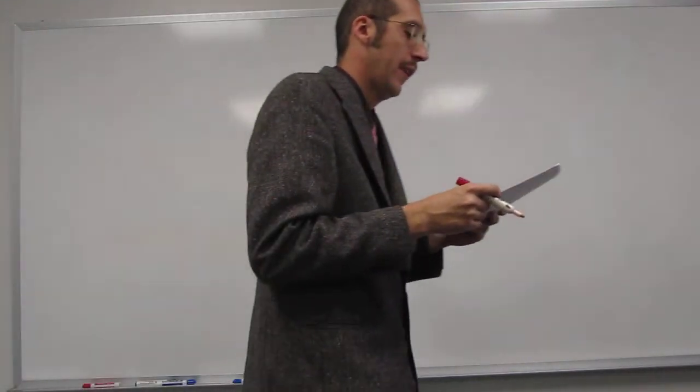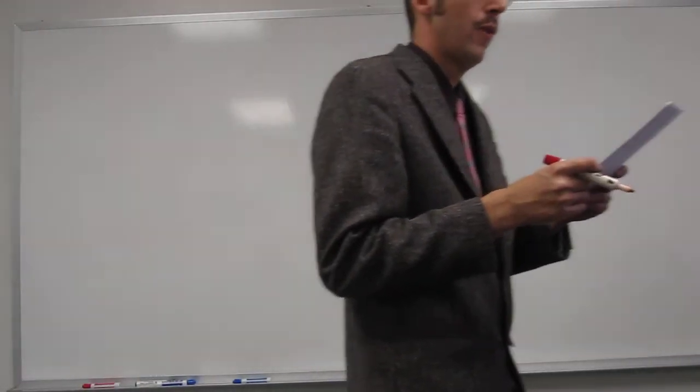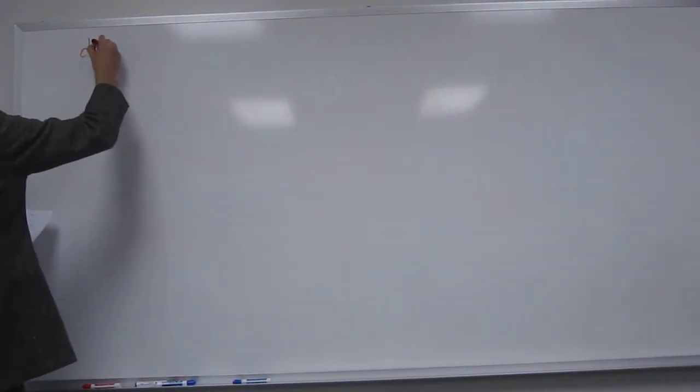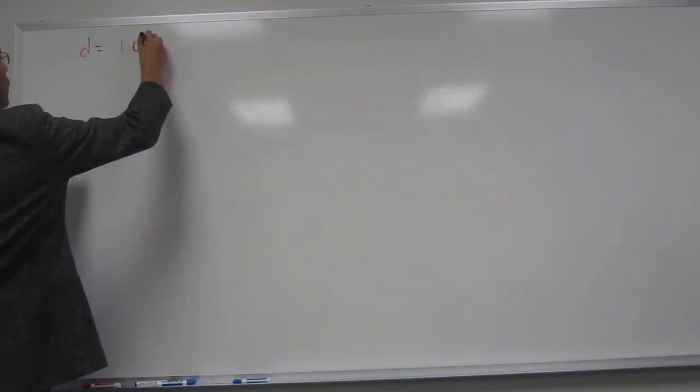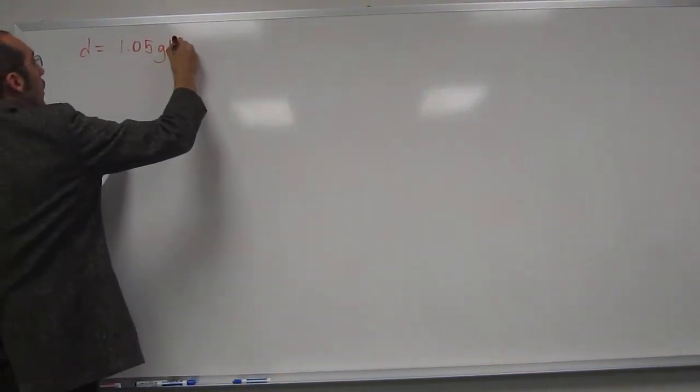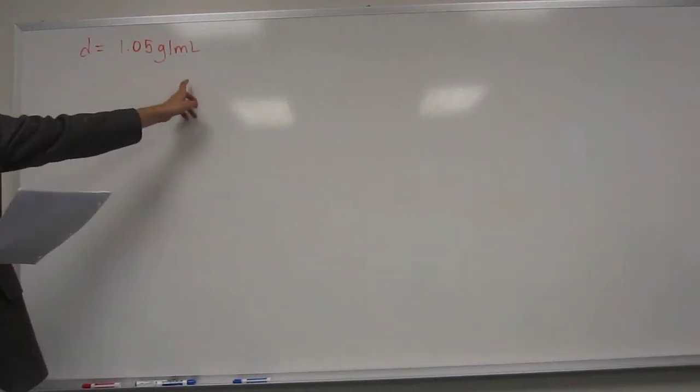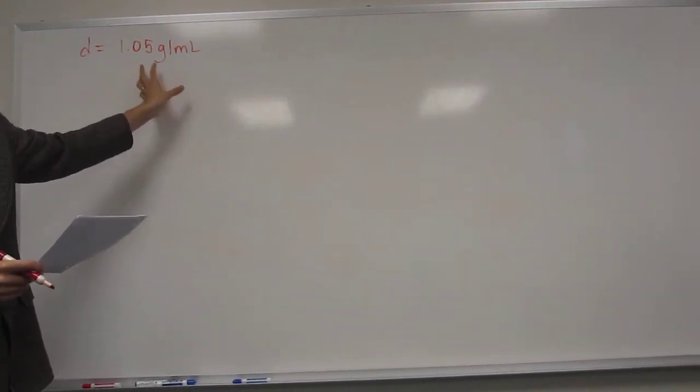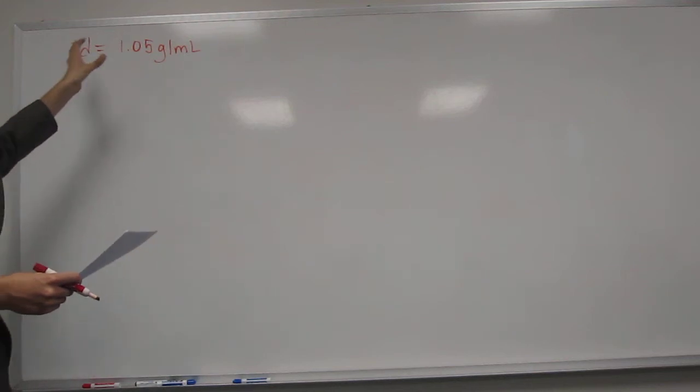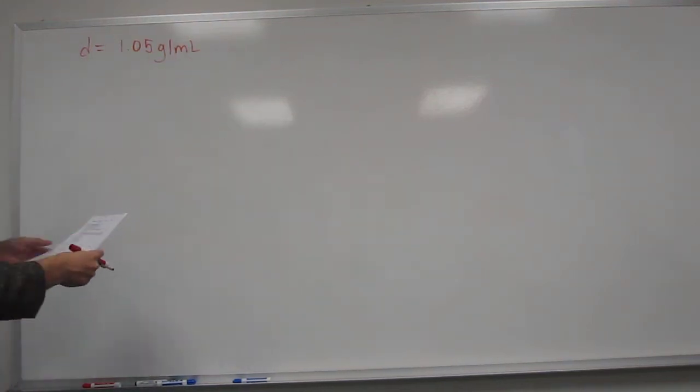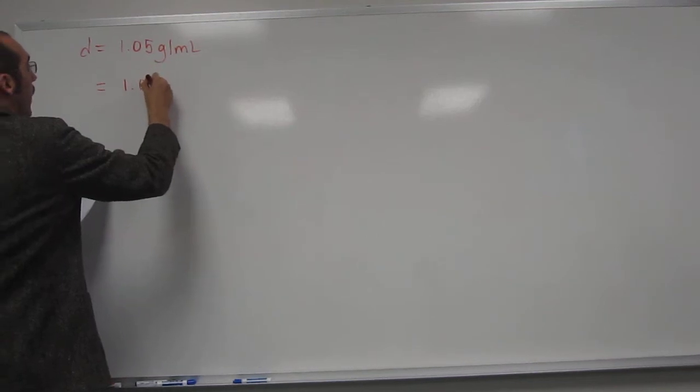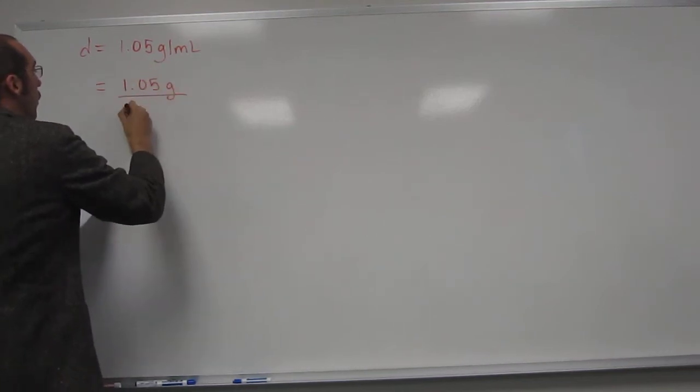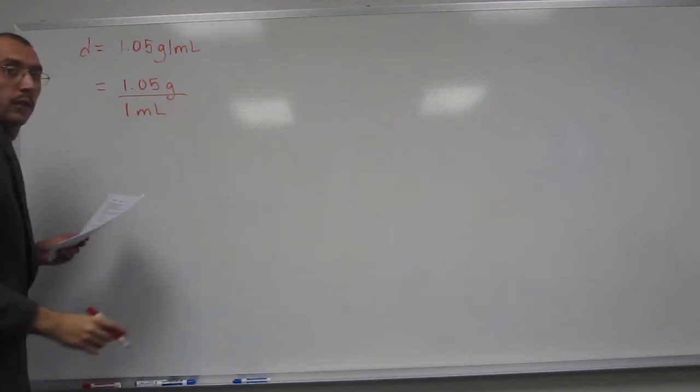So if a sample of blood was found to have a density of 1.5 grams per mil, okay? So density, that's the first thing we want to do. 1 point, sorry, 1.05 grams per mil. Now remember, this is like the text messaging way of writing it. We want to, for chemistry, we want to write it out normal. So 1.05 grams per 1 mil.